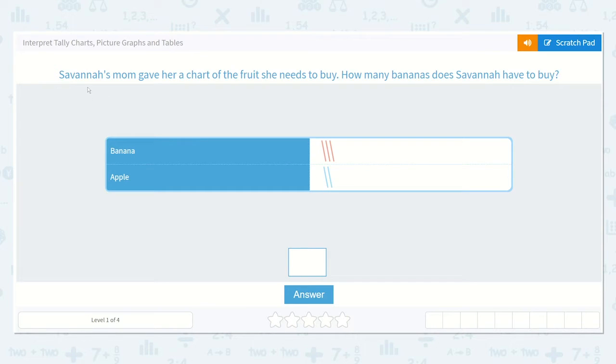This one says, Savannah's mom gave her a chart of the fruit she needs to buy. How many bananas does Savannah have to buy? Well, when I'm looking at this chart, I can see that there are bananas in this row and apples in this row.